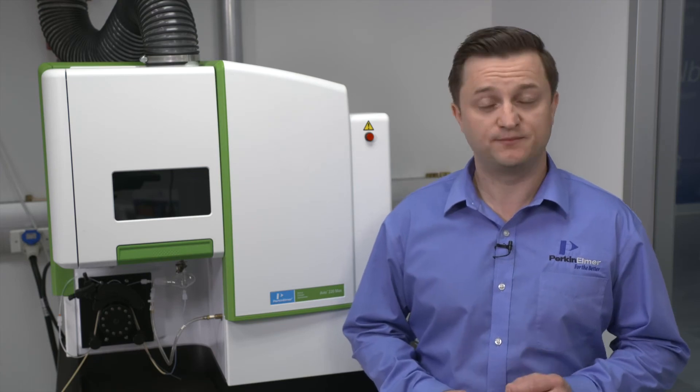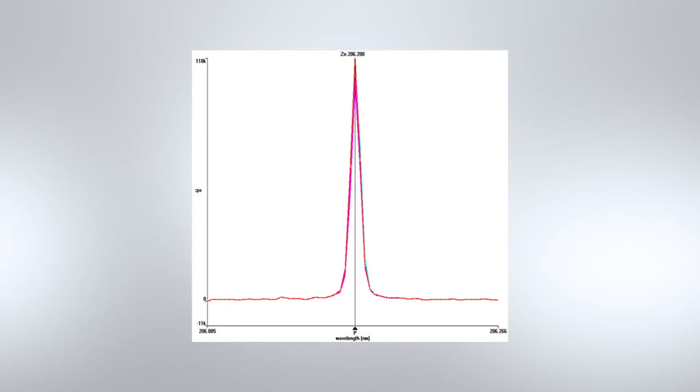An example of this is when 60 consecutive measurements at constant temperature at zinc wavelength 206 are overlayed. The overlay of the measurements is so exact that it is hard to see any difference from one measurement to the next.